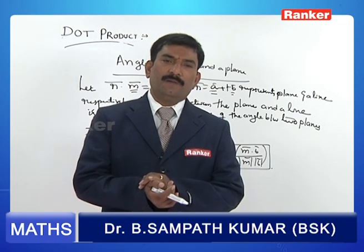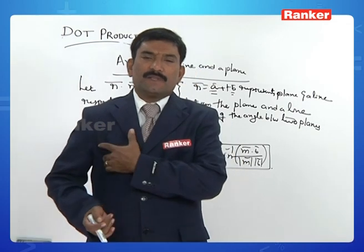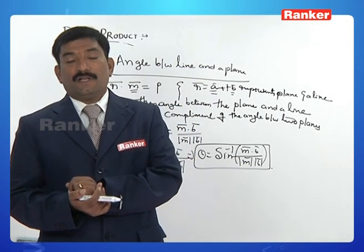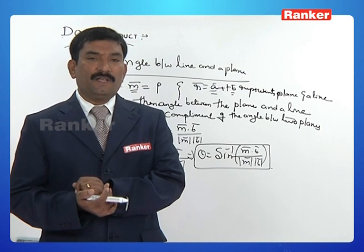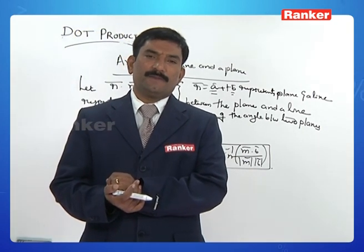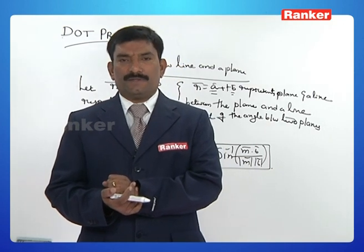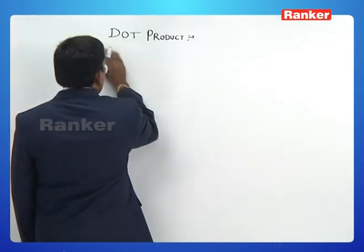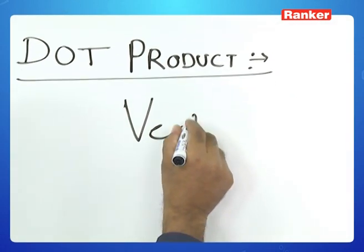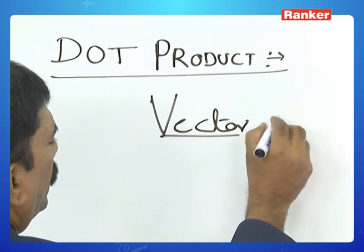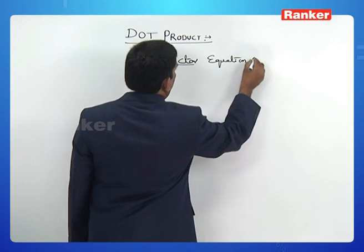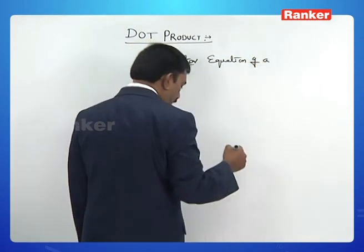This is the angle between a line and a plane. By using the concept of angle between two planes, angle between two lines, and angle between a line and a plane, let us now discuss some special problems of geometrical applications. Next is the vector equation of a sphere.